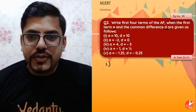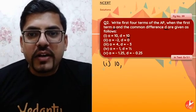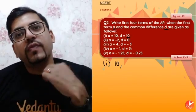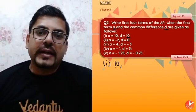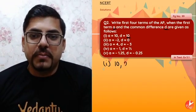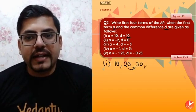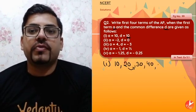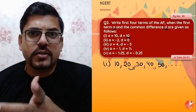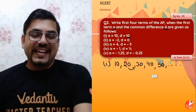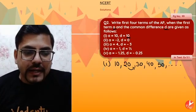First one: first term is 10 and common difference is also 10. So every time you will be adding 10. 10 mein 10 add karo toh 20, 20 mein 10 add kiya toh 30, 30 mein 10 add kiya toh 40, 40 mein 10 add kiya toh 50, and so on. So the AP is: 10, 20, 30, 40, 50...